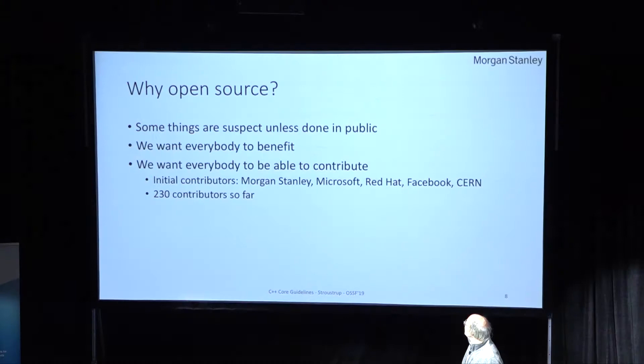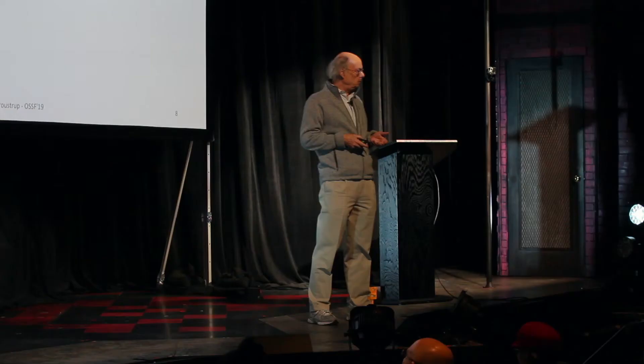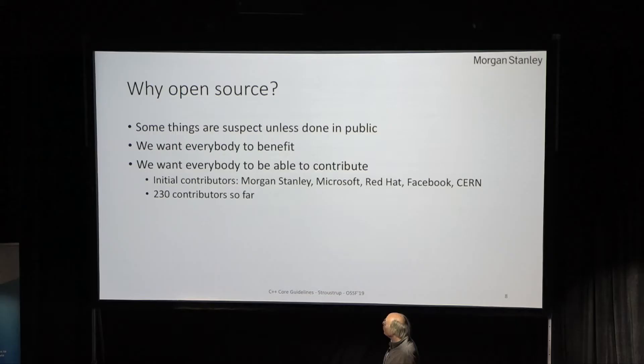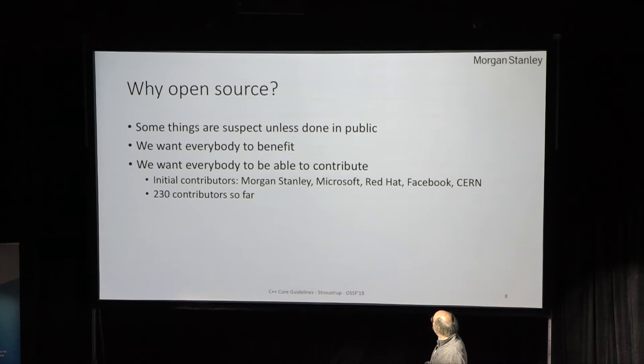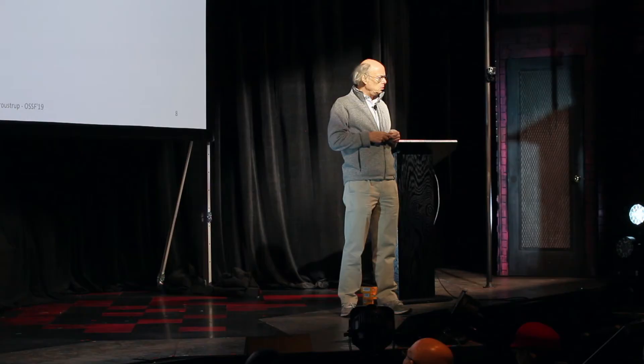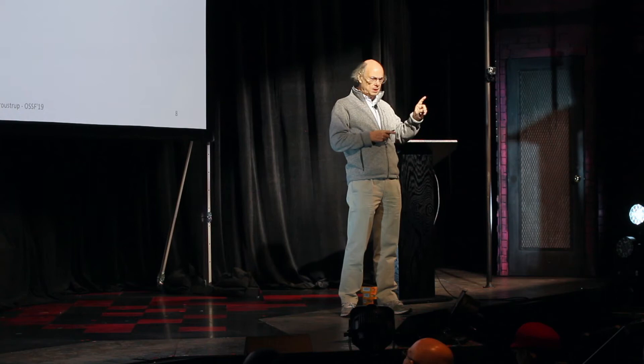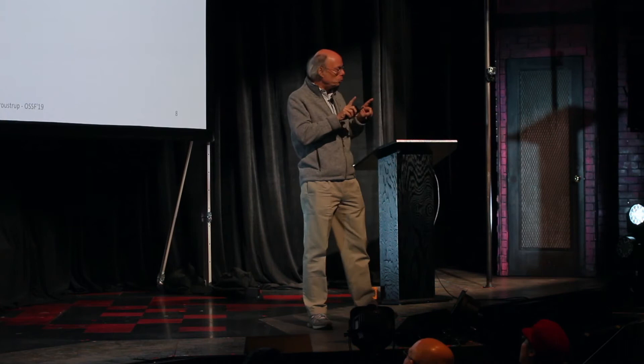So what does this have to do with open source? Basically, some things are suspect unless they are done in public. The C++ standardization is done in public under ISO rules. And these guidelines — we need to do them in public. Furthermore, we want everybody to benefit, so we can't have it private or expensive. And we want everybody to contribute. The initial contributors included Morgan Stanley, Microsoft, Red Hat, Facebook, and CERN. Notice Red Hat and Microsoft — that's an unusual combination. We had to do something like open source, so we made it open source.